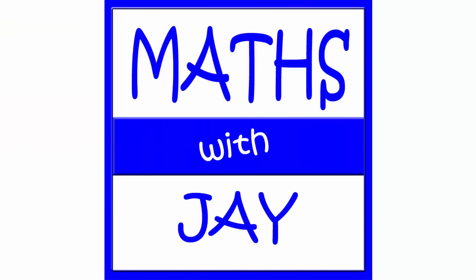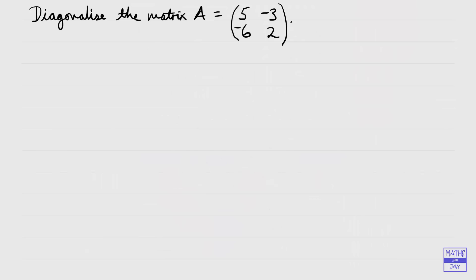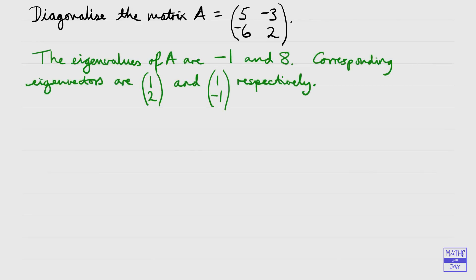Hello and welcome to Maths with Jay. We're going to diagonalise this matrix. So that means we need to start off by writing down the eigenvalues and eigenvectors of the matrix. We've already done that in an earlier video, so let's just write down what we found. We found that the eigenvalues were real and distinct — they're different from each other — and we've got the eigenvectors that correspond to those eigenvalues.